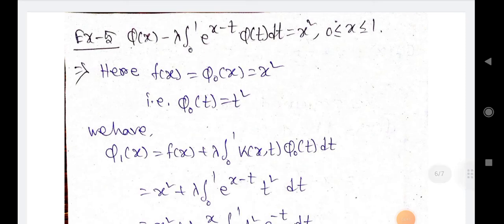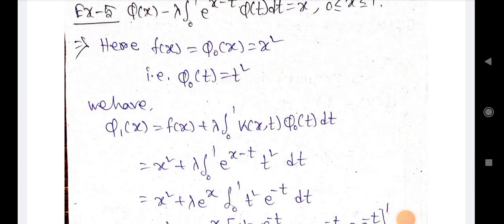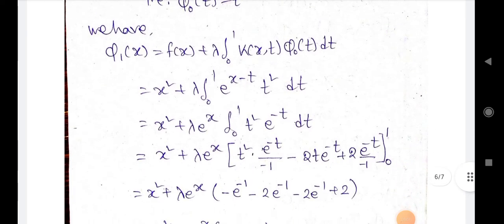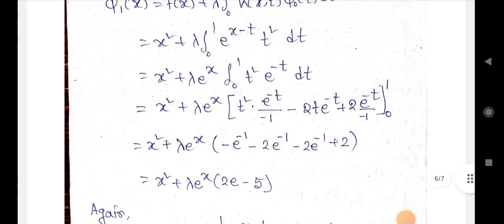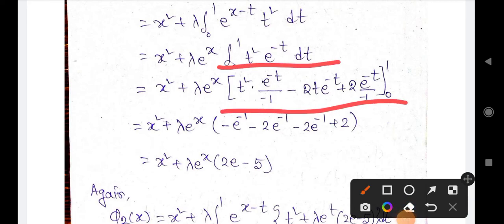Example 5: φ(x) - λ·∫₀¹ e^(x-t)·φ(t) dt = x². Here φ₀(x) = x², so φ₀(t) = t². We have φ₁(x) = f(x) + λ·∫₀¹ k(x,t)·φ₀(t) dt = x² + λ·∫₀¹ e^(x-t)·t² dt. We use integration by parts.